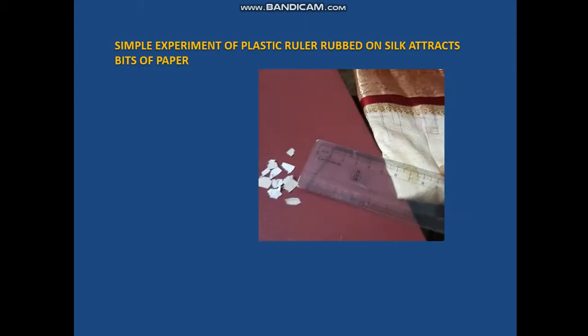Let us see a simple experiment of a plastic ruler rubbed on silk attracting bits of paper. What happens exactly? The ruler acquires positive charge when rubbed on silk cloth. The bits of paper have positive as well as negative charges. The positive charges on the ruler attract the paper because the paper acquires negative and positive charges, and hence they get attracted towards the ruler.